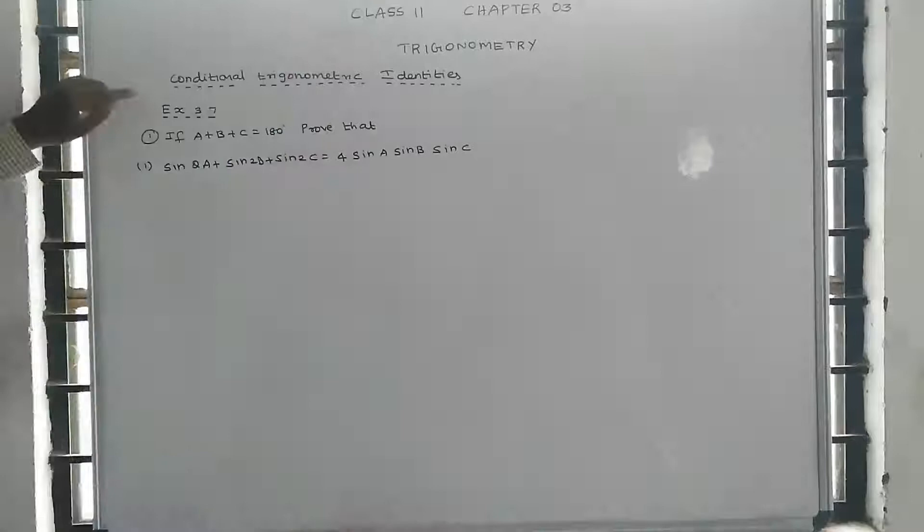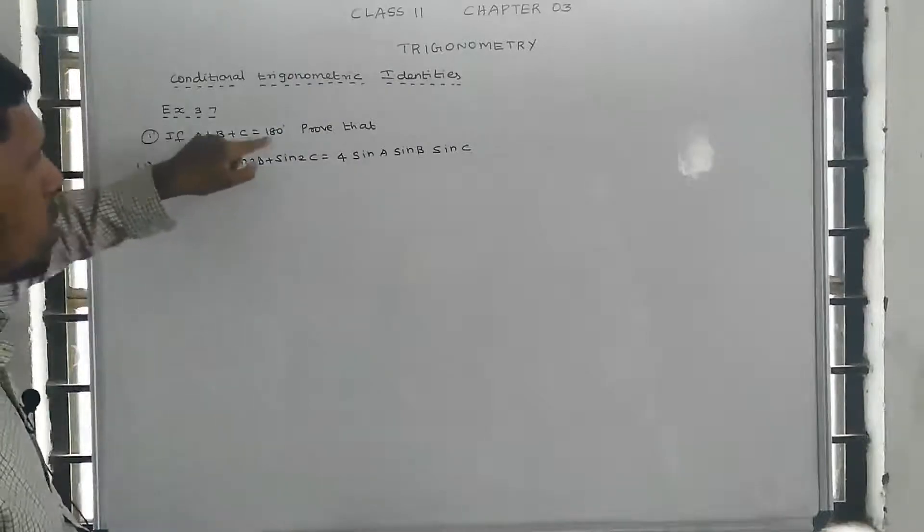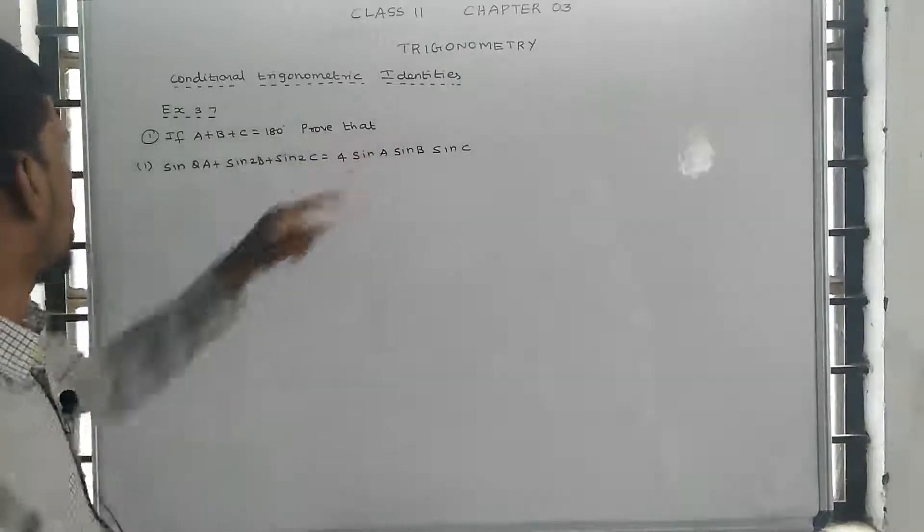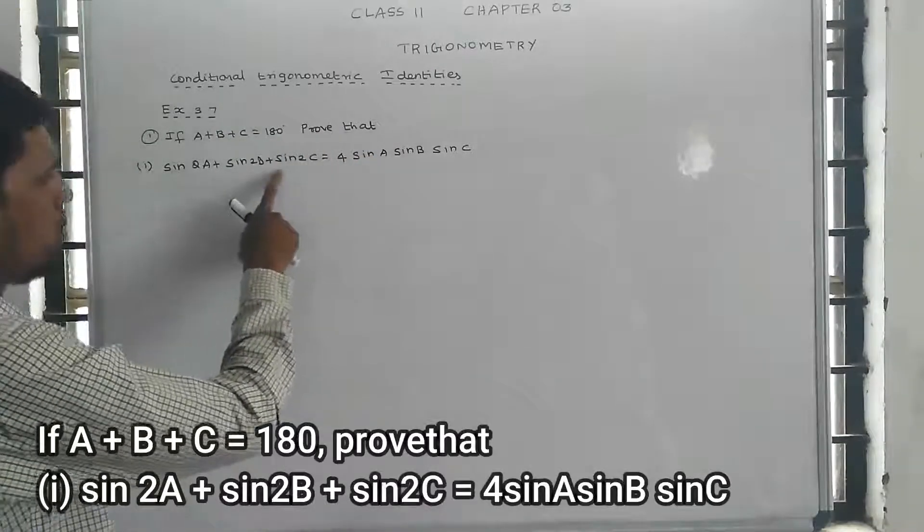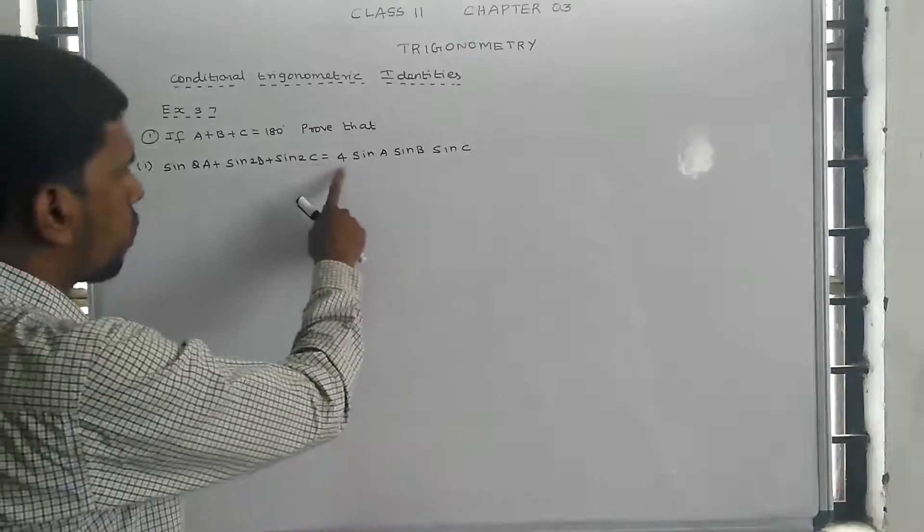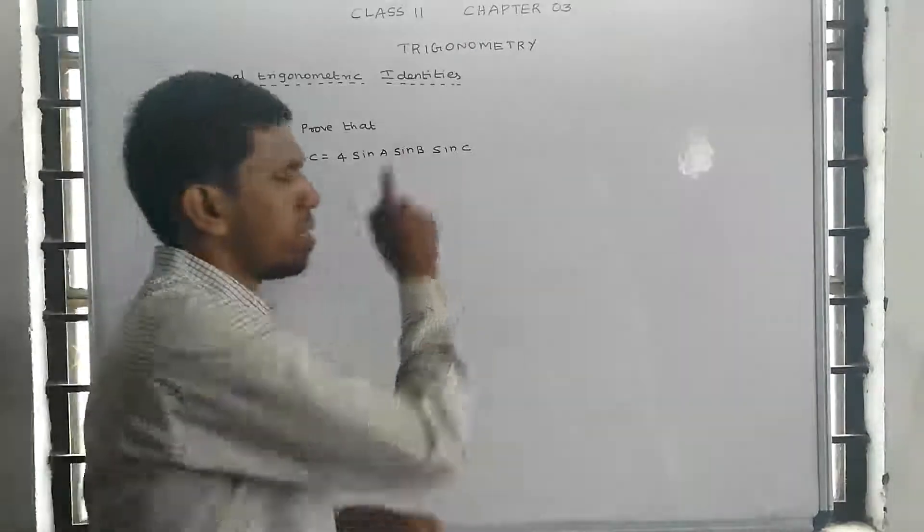Welcome students, Exercise 3.7 question 1. If a + b + c = 180 degrees, prove that sin 2a + sin 2b + sin 2c = 4 sin a sin b sin c.